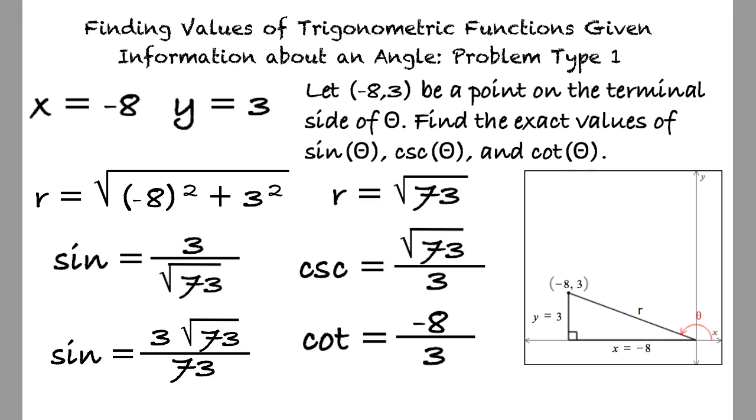I think I'm starting to understand this topic, but let me quickly summarize just to be sure. We begin by drawing a right triangle where the side lengths are the x and y values from the given coordinate. Next, we determine the value of the hypotenuse using the Pythagorean theorem. Lastly, we substitute the side lengths into the trigonometric identities for the given trigonometric functions. That's right.